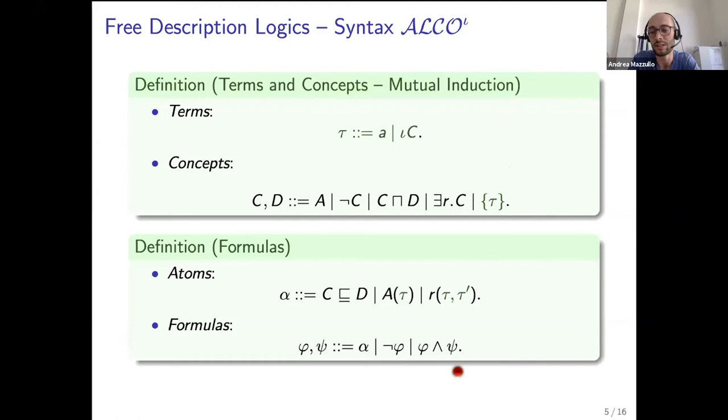We also have formulas as usual: concept inclusions and assertions and Boolean operators on them. We have considered also a variant of the language that we call yellow iota in which we disallow negation over concepts but we allow for the top and bottom concept and again the nominal constructor with arbitrary terms inside and Boolean operators on formulas.